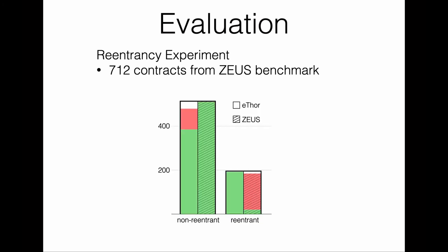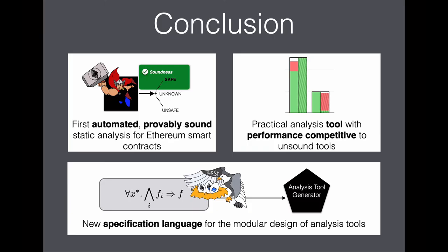As shown in the graph, the majority of contracts in the benchmark are non-reentrant. ETHOR has more false positives than Zeus in the non-hatched area, due to the use of only sound abstractions. Looking at the right side, we see experimental affirmation of ETHOR's soundness: there are no false negatives, whereas Zeus classifies many contracts deemed reentrant according to our formal definition as non-reentrant. With regard to F-measure, ETHOR outperforms Zeus at 89% to 20%. In conclusion, we present ETHOR, the first automated, provably sound static analysis tool for Ethereum smart contracts, which is practical and shows competitive performance. We also introduce HORST, a new specification language for the modular design of static analysis tools. Thank you for your attention.